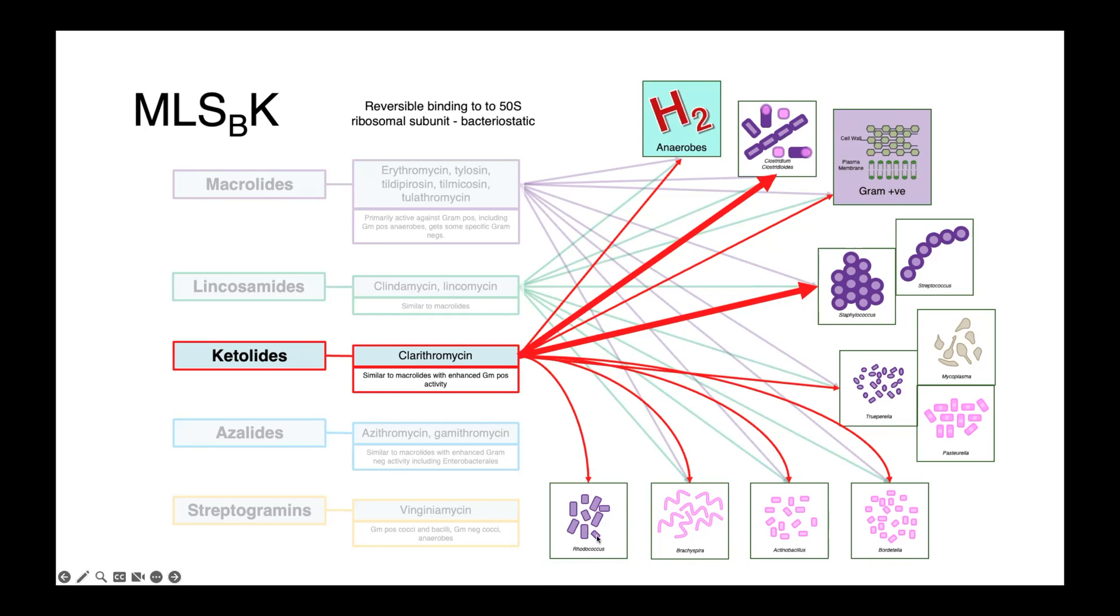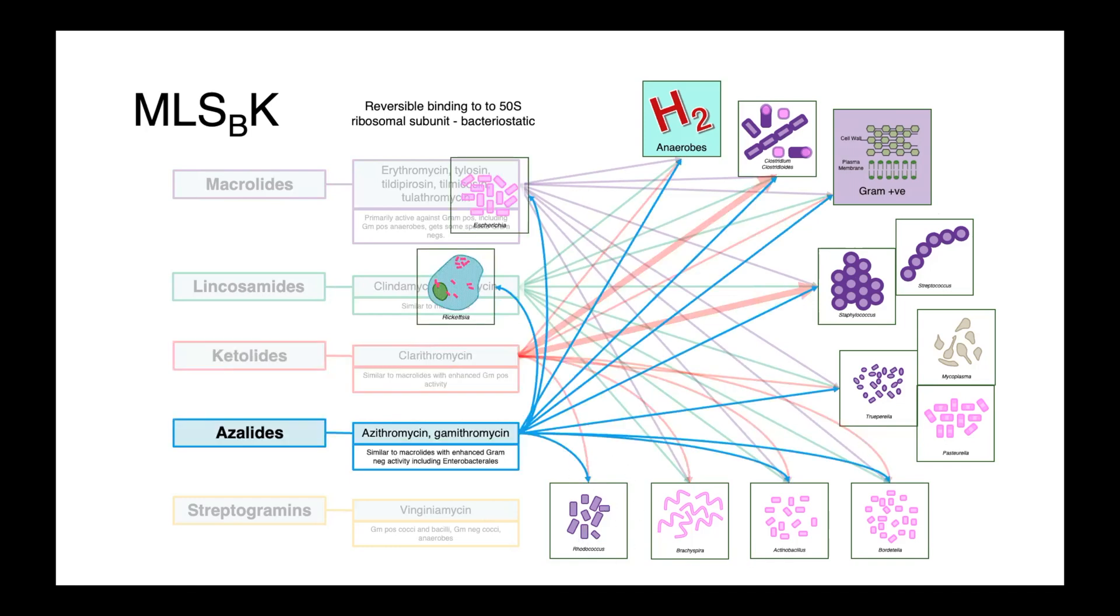Our azolides, azithromycin and gamithromycin, have, again, similar activity, plus activity against some intracellular pathogens, such as rickettsia, and also some activity against susceptible Enterobacterales, like E. coli. So we start to see a little bit of gram-negative spectrum.